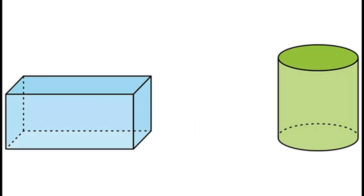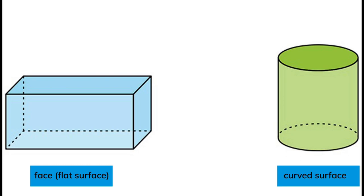Some 3D shapes have flat surfaces. Others have curved surfaces. A cuboid has only flat surfaces. A cylinder has curved surfaces and two flat surfaces.